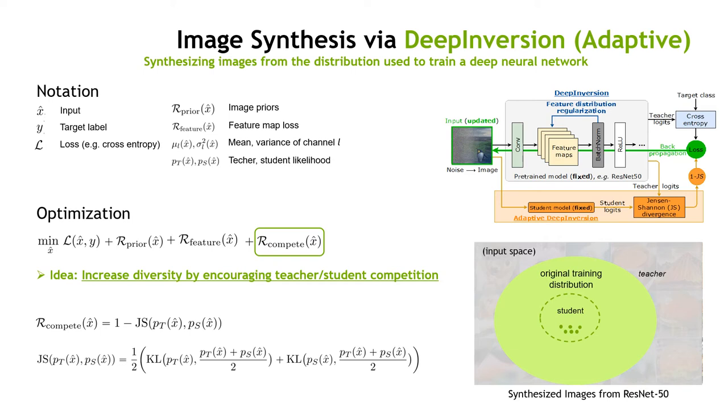Given the initial set of generated images, a student can learn to capture this part of the distribution. Upon generating new samples, competition encourages new samples outside the student knowledge scope. Iteratively, this improves image diversity.